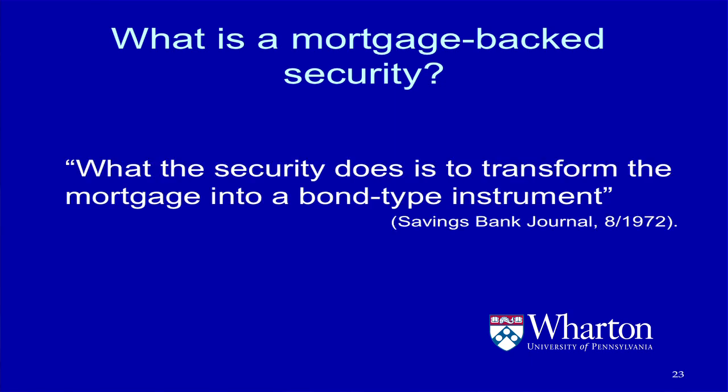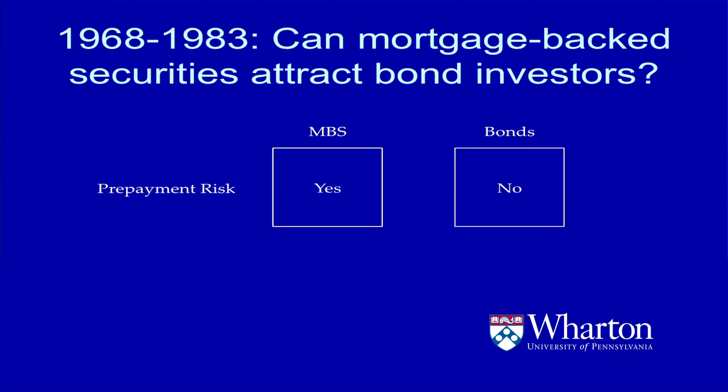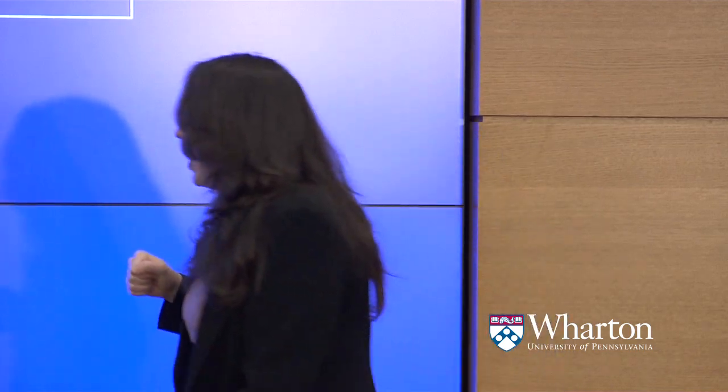What is a mortgage-backed security? If you asked folks in the late 1960s and early 70s, a mortgage-backed security transforms a mortgage into a bond. This was very strange. There were all kinds of reasons to believe that mortgages and bonds are different. Mortgage-backed securities when they were launched were quite different from bonds along a number of dimensions. And yet, the bond investors focused on only one of these dimensions: a dimension with the strange title of prepayment risk.